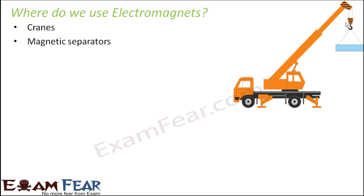Electromagnets are also used as magnetic separators. Magnetic separators are used to separate ferromagnetic materials from a waste dump of other metals. For example, you can separate scrap iron or steel. When you switch on the current, the magnetic field is on and the device acts as a magnetic separator. When you do not need it, just switch off the current and it will no longer behave like a magnet. These electromagnets find applications in small-scale as well as large-scale industries.